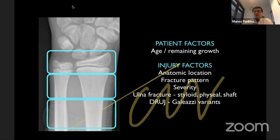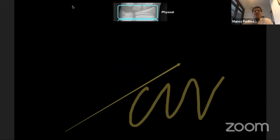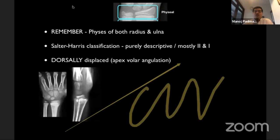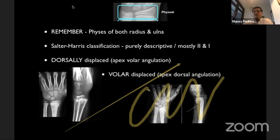As you go up the age spectrum into the adolescent and adult age group, you're looking at Galeazzi variants, wherein the distal radio-ulnar joint is involved. Regarding physeal fractures — remember that includes both radius and ulna. Most treatment algorithms are based on just the radius, but ulnar physeal injuries can create problems. The Salter-Harris classification is the descriptive one; almost all are either type 1 or type 2, so it doesn't really help with management. What helps is the direction of displacement — is it dorsally displaced (apex volar angulation), which is the majority of situations, or is it a volar displacement, which is probably less than 5% of cases?